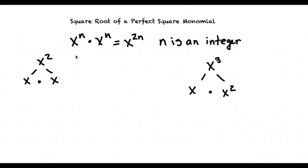For example, x to the n times x to the n is always going to be equal to x to the 2n, where n is an integer value.